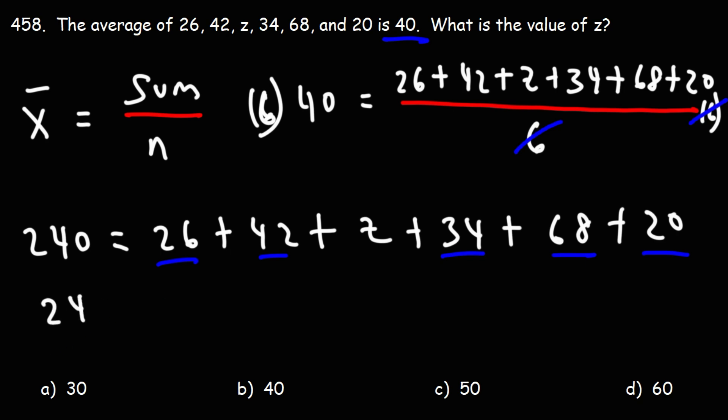So we have 240 is equal to 190 plus Z. Now, to solve for Z, we need to subtract both sides by 190. So Z is going to be 240 minus 190, which is 50.